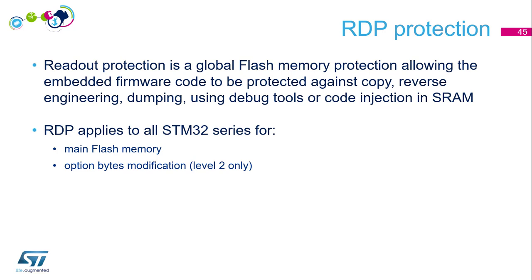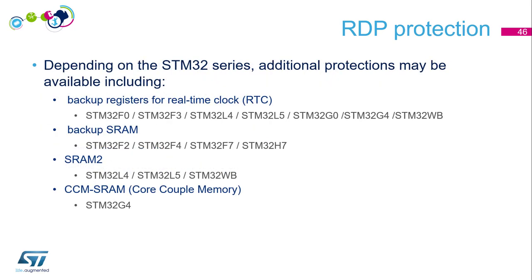RDP applies to all STM32 devices to protect the main flash memory and also the option byte modification, but option byte protection is only on level 2. Depending on the STM32 series, there is additional protection for backup registers, backup SRAM, SRAM2, and sometimes the CCM SRAM — this last point is particular to the G4. Details should be checked in the reference manual.